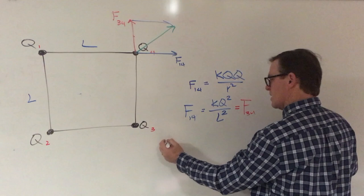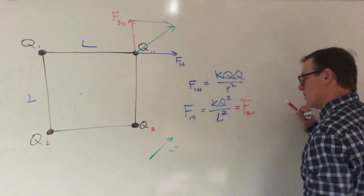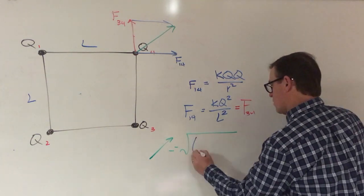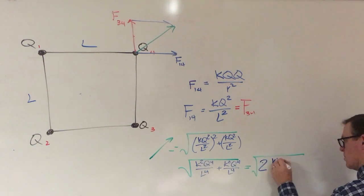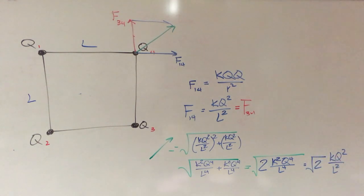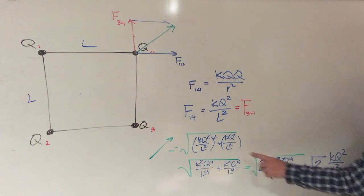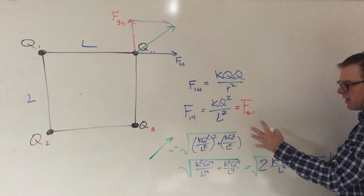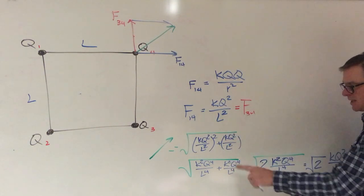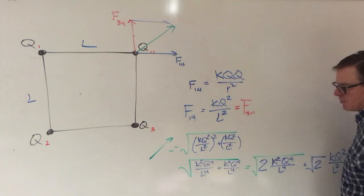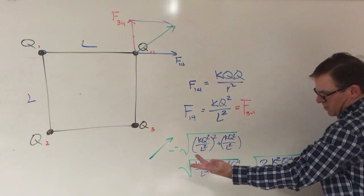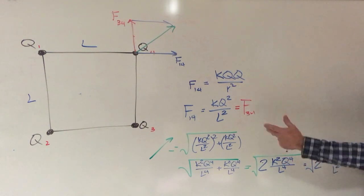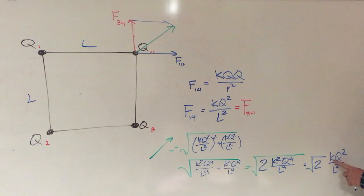The green vector is equal to the square root of a squared plus b squared. So I just distributed the square. I distributed the square to each component inside the parentheses. I got K squared Q to the fourth over L to the fourth and this is the same thing. When you add them together, you just get two K squared Q to the fourth over L to the fourth and the square root of all that is root two times KQ squared over L squared. So that is what the green vector equals.